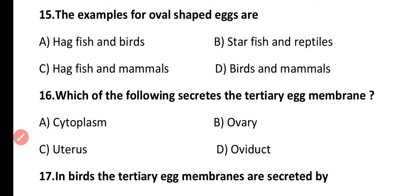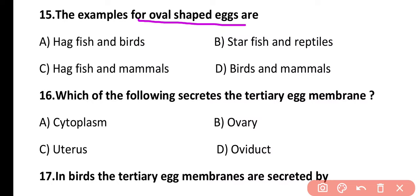Question 15. The examples of oval-shaped eggs are hagfish and birds, starfish and reptiles, or hagfish and mammals? The correct answer is option A. Oval-shaped eggs are present in hagfishes and birds.